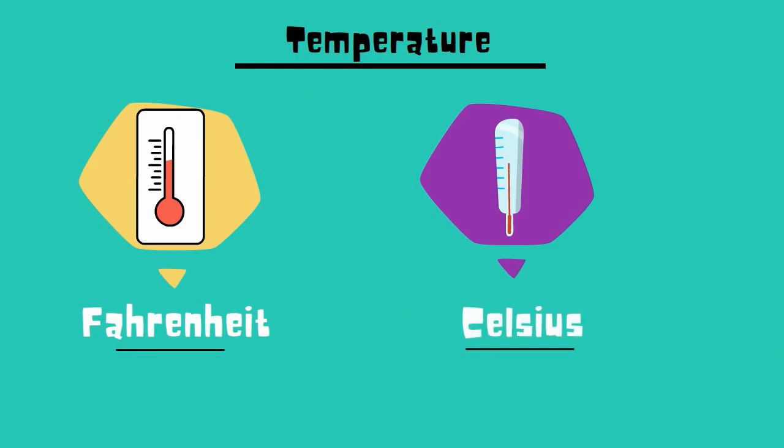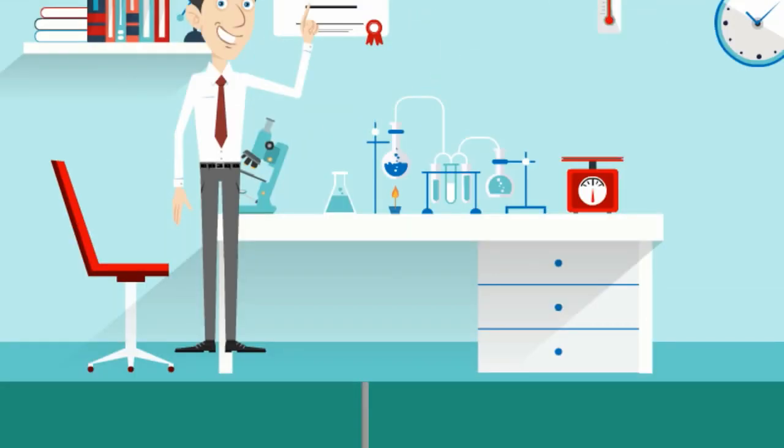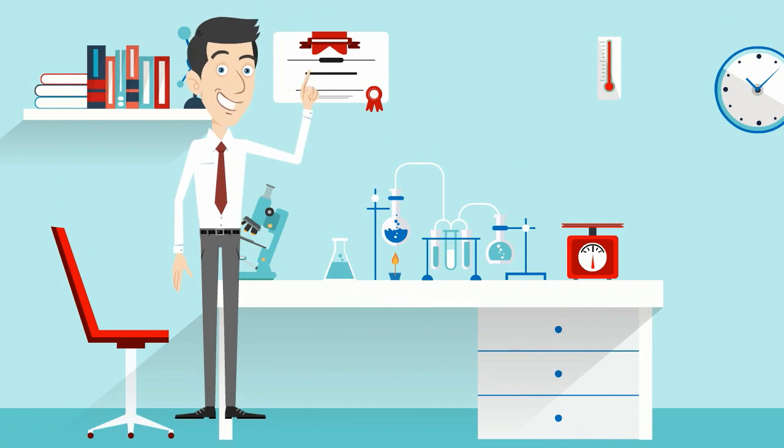Fahrenheit sets a boiling point at 212 degrees and freezing at 32 degrees. Celsius has the boiling point at 100 degrees and freezing at zero. I am more familiar with the Fahrenheit scale, however in science many of the measurements of temperature are in Celsius.